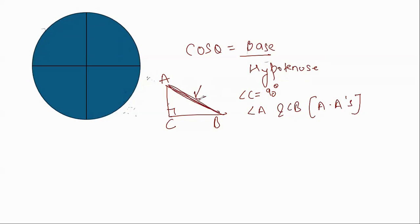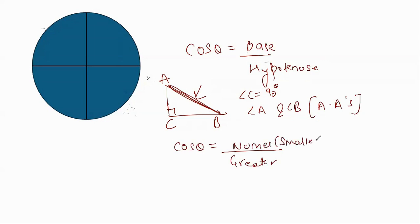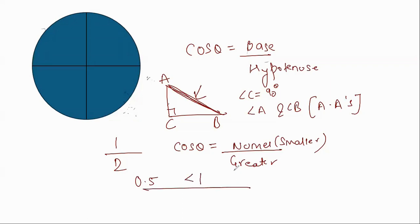The hypotenuse AB will be larger than AC and BC. If AB is larger than AC and BC, it means the denominator is greater than the numerator. When the denominator is greater than the numerator — for example 1 over 2 — the answer is always 0-point-something, so it is always less than 1. This is one reason why the cos θ value is always less than 1.